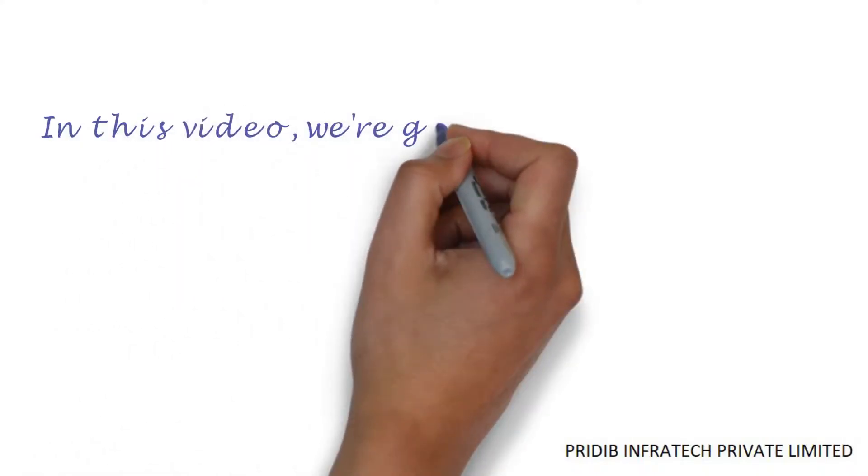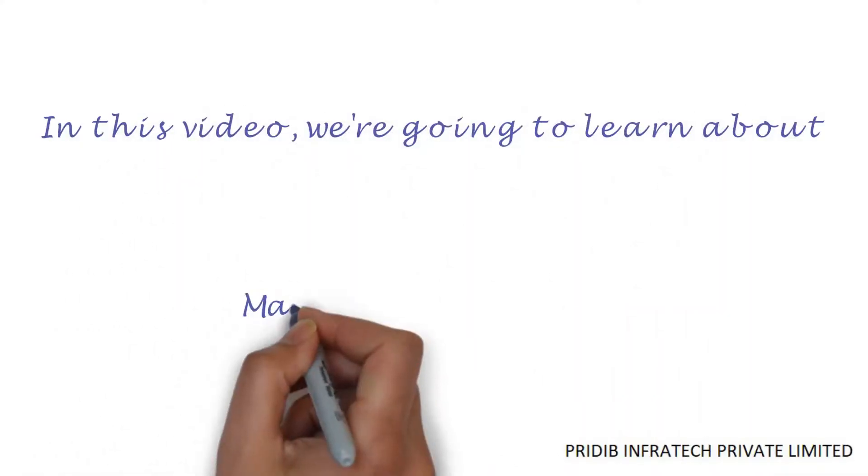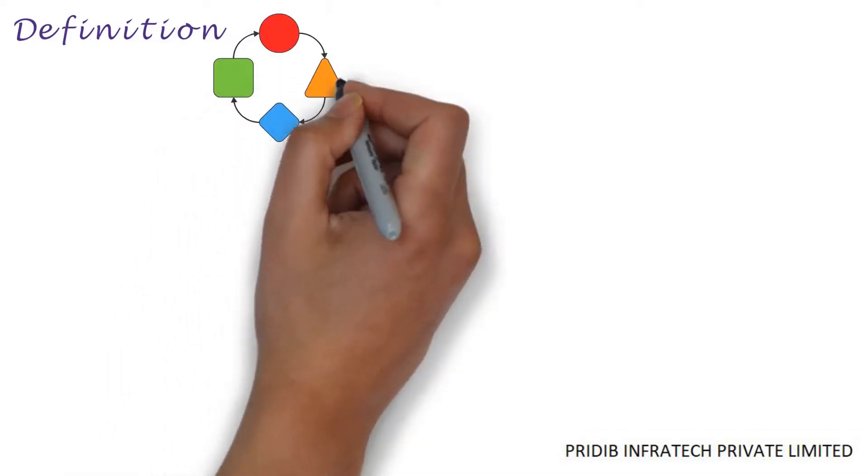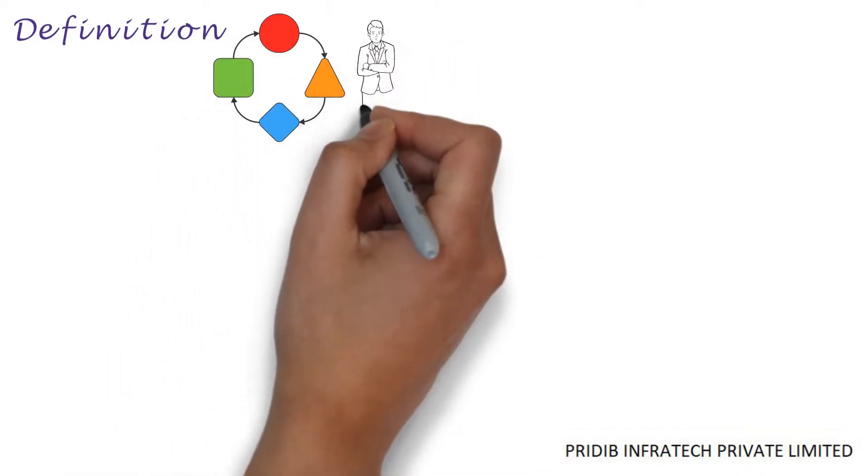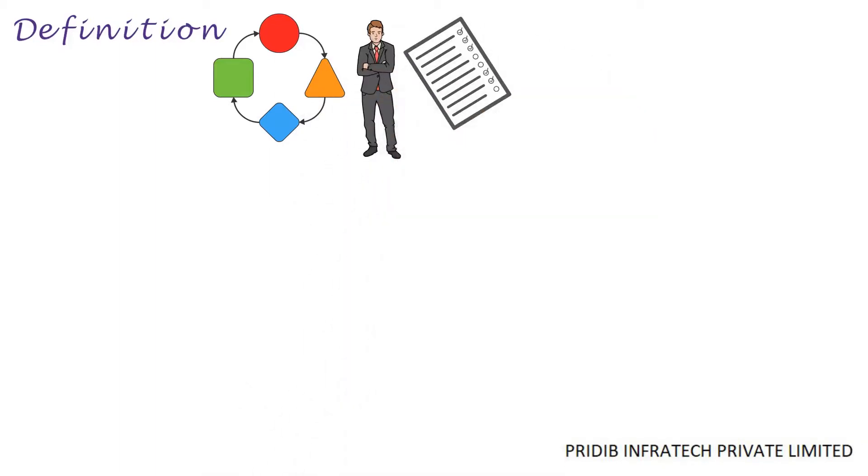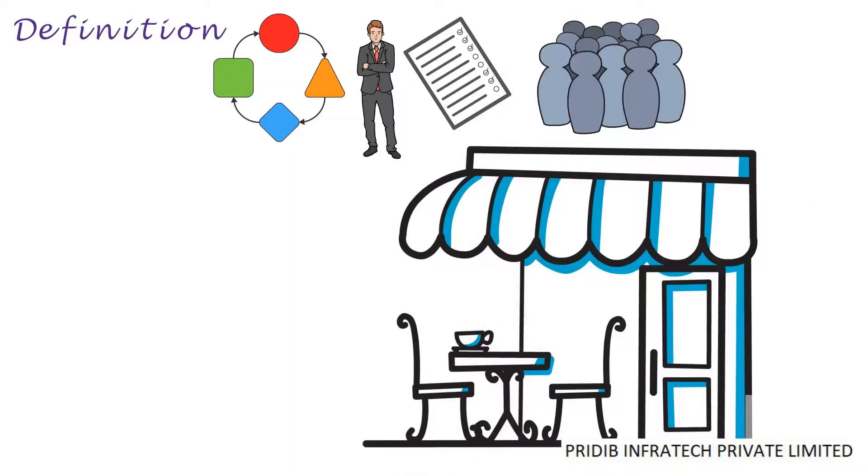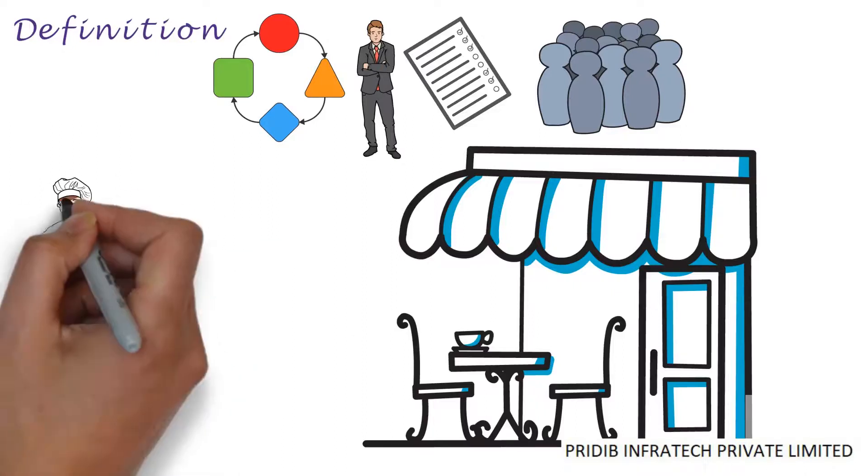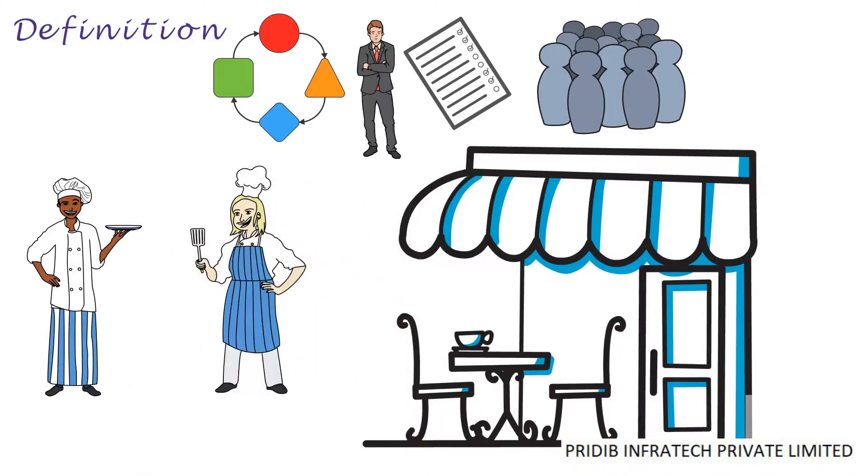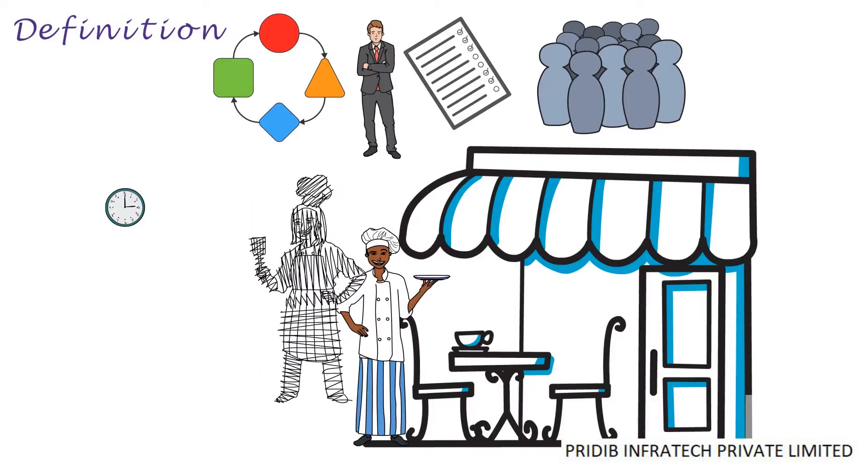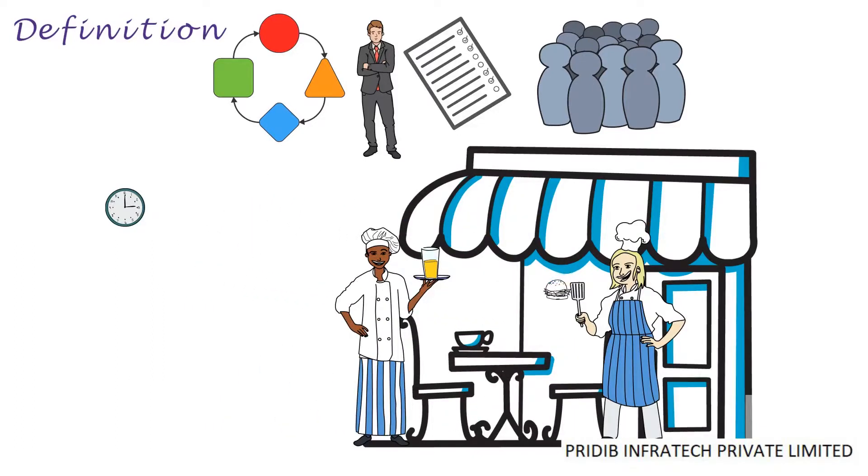In this video, we are going to learn about manpower planning. Let us first take the definition of manpower planning. Manpower planning refers to the process wherein the entrepreneur plans the human resources in such a way that the enterprise has the human resources who possess the desired skill set, available at the right time, available at the right place to perform the assigned job.